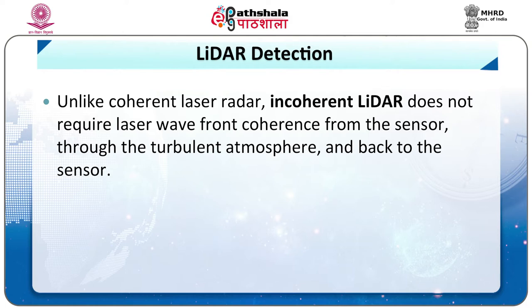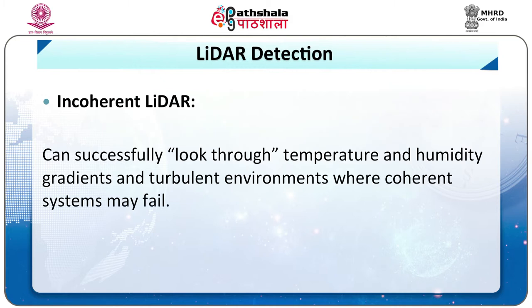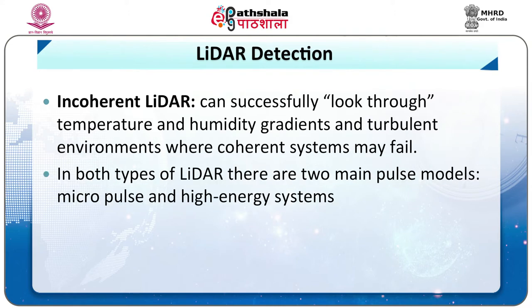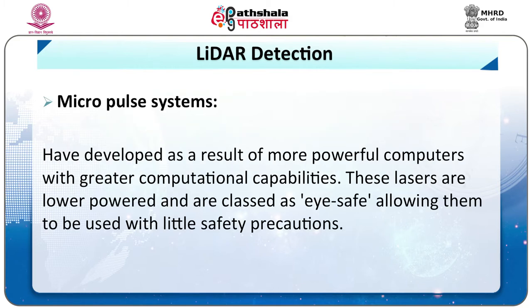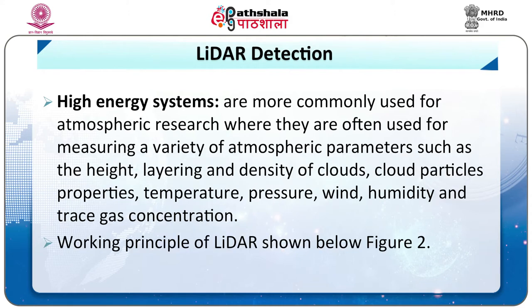Unlike coherent radar, incoherent LIDAR does not require laser wavefront coherence from the sensor through the turbulent atmosphere and back. Incoherent LIDAR can successfully look through temperature and humidity gradients and turbulent environments wherein coherent systems may fail. In both types of LIDAR, there are two main pulse modes: micropulse and high energy systems. Micropulse systems developed as a result of more powerful computers. These lasers are lower powered and are classed as eye-safe. High energy systems are more commonly used for atmospheric research, measuring atmospheric parameters such as height, layering and density of clouds, cloud particulate properties, temperature, pressure, wind, humidity and trace gas concentration.